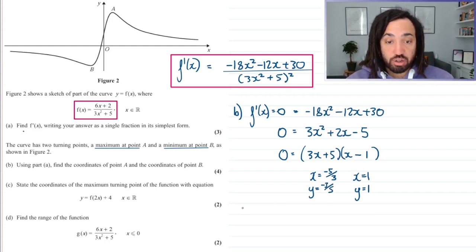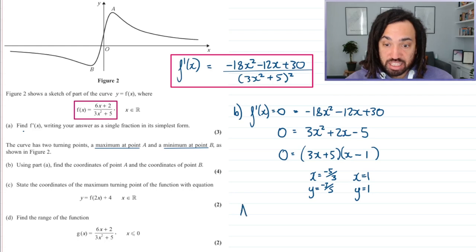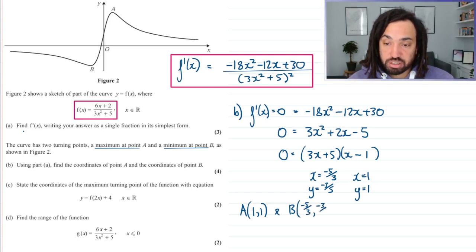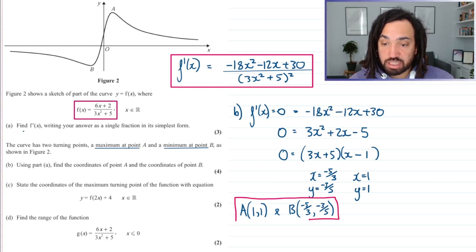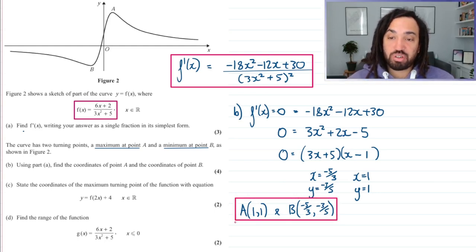So I've just finished that off by saying that a is clearly the maximum, which is clearly one one. You can see by the graph that it's in the positive quadrant. And b is obviously the other one, which is minus five over three and then minus three over five. So that looks like the final answer for part b.